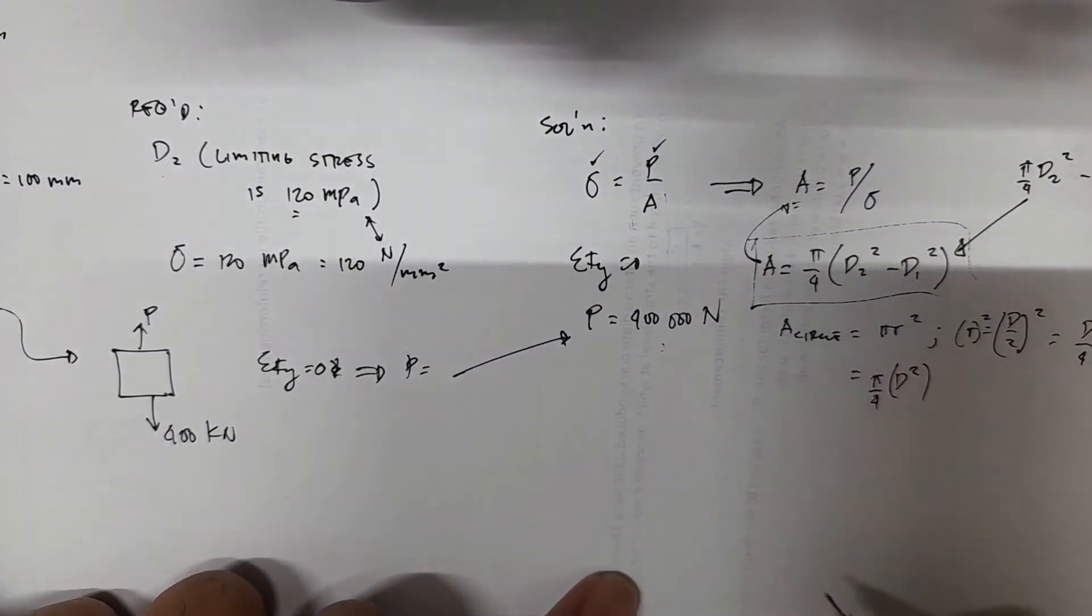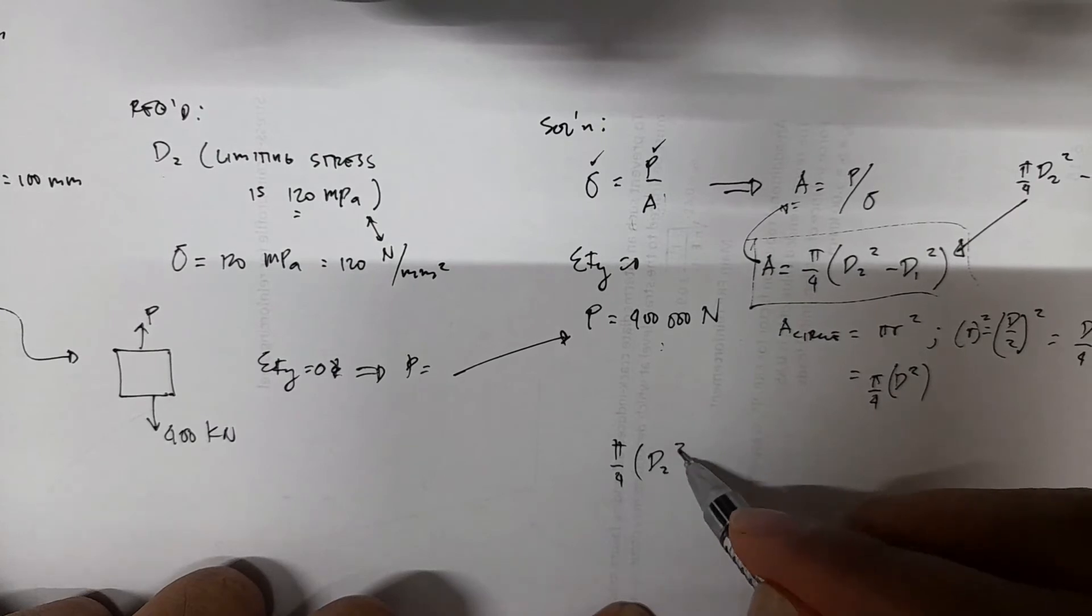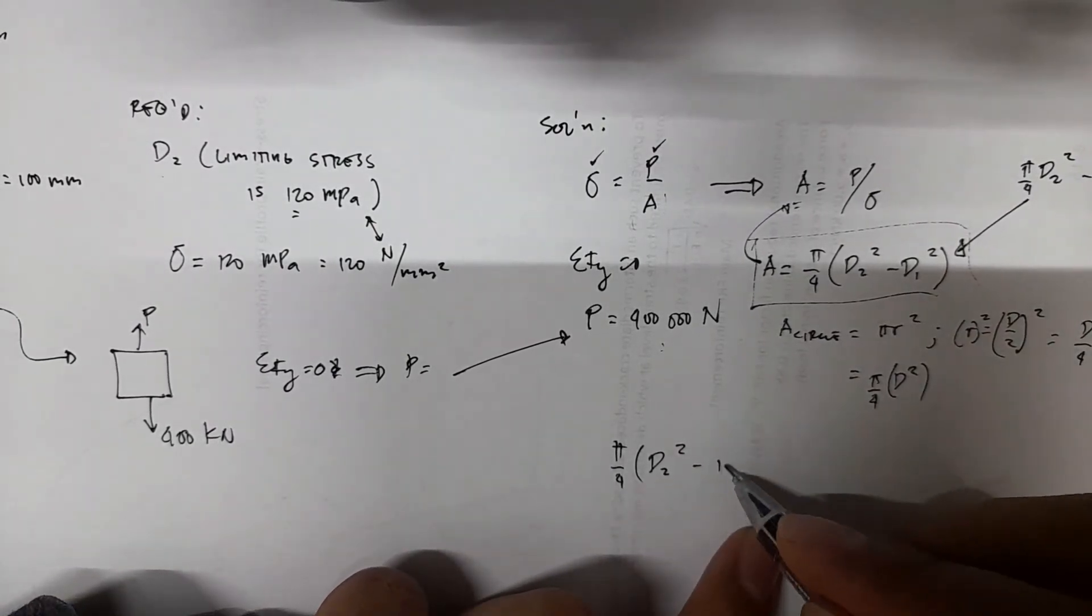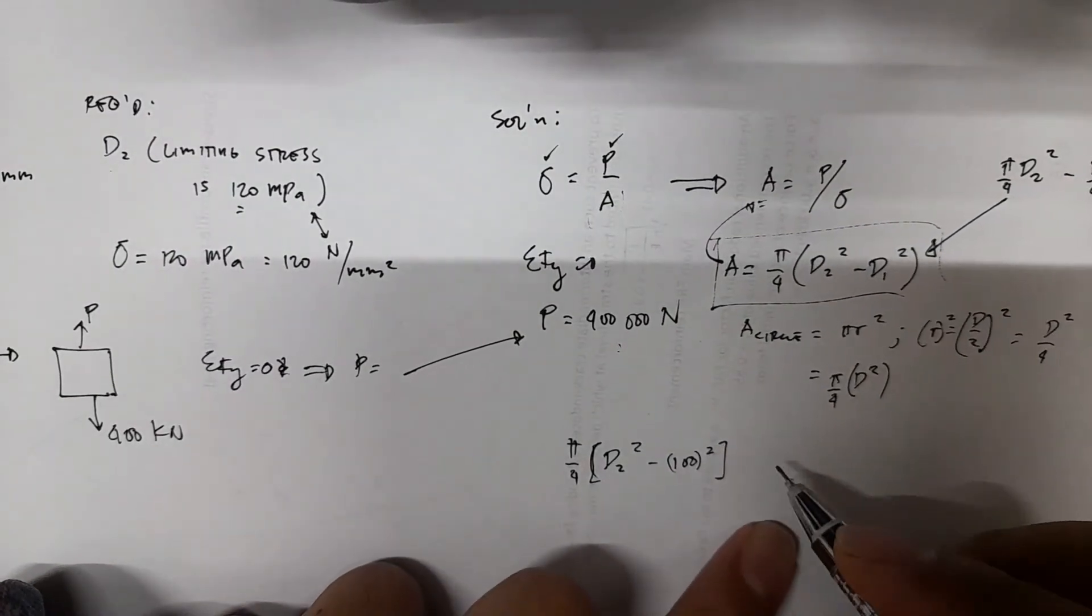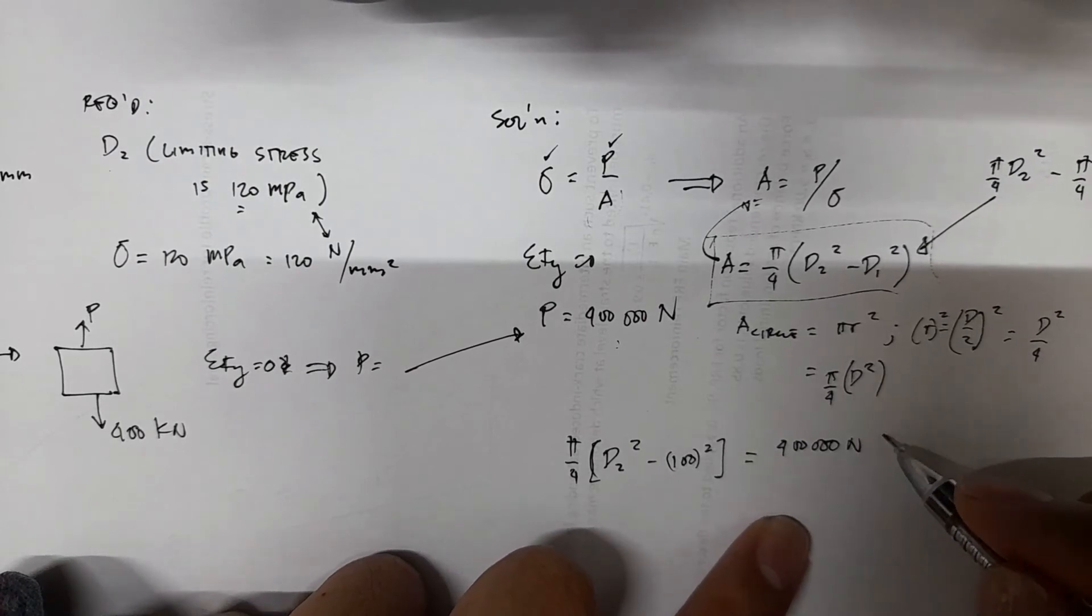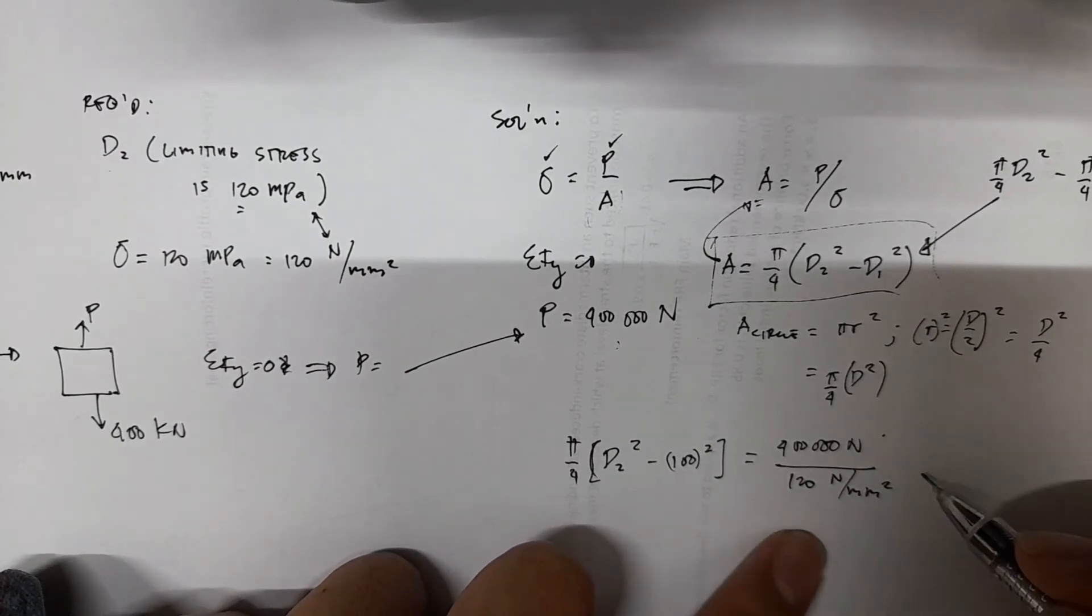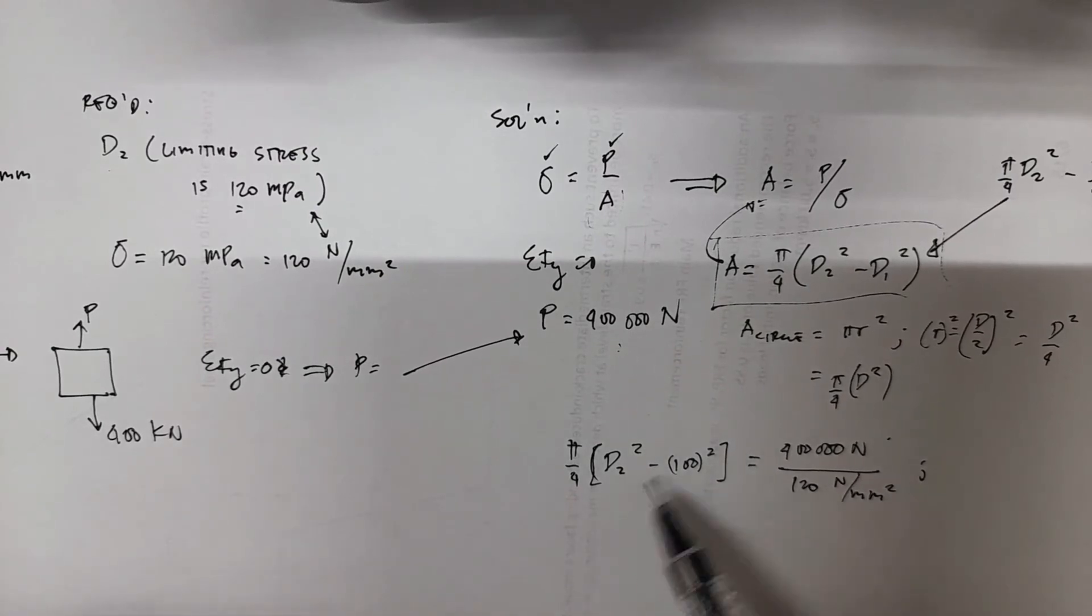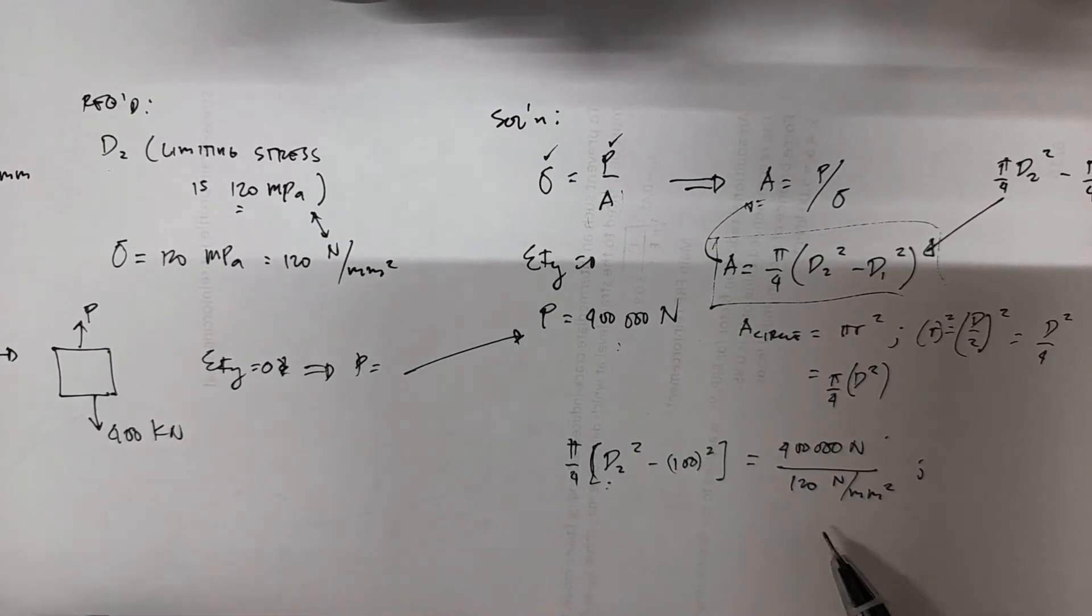So continuing, you have to substitute. You now have pi over 4, D2 squared minus, we substitute D1, 100 squared. And then we have the P, which is 400,000 newton, divided by the 120 newton per millimeter squared. You only have a single unknown remaining, the D2, so you can copy this equation in your calculator, and then you can hit shift solve, and the calculator will automatically give you the value of D2.